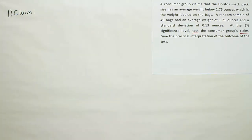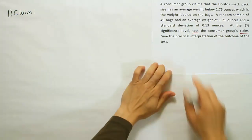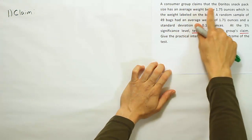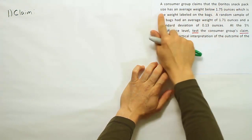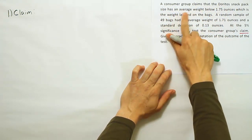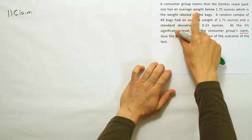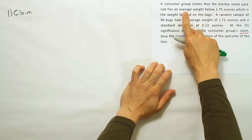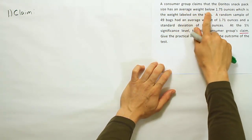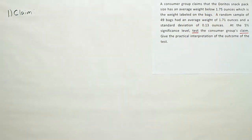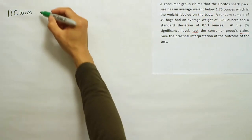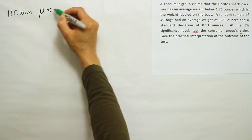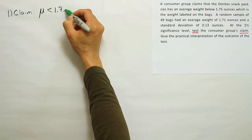We want to express the claim in symbols. The problem says a consumer group claims that the Doritos snack pack size has an average — that'll be mean — weight below 1.75 ounces. So a mean that's less than 1.75. In symbols, we'll write mu less than 1.75.